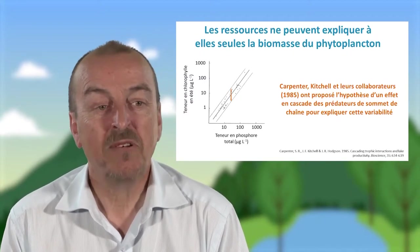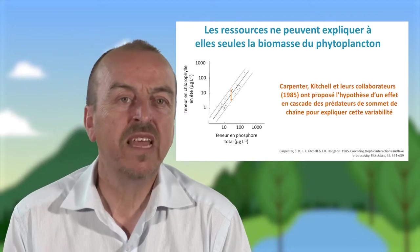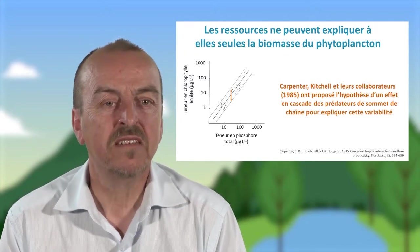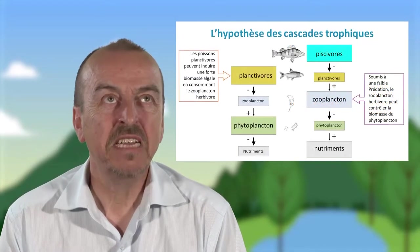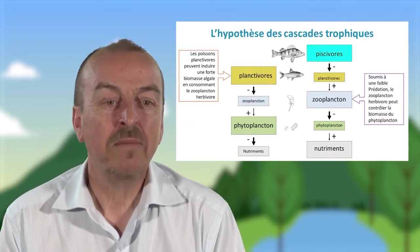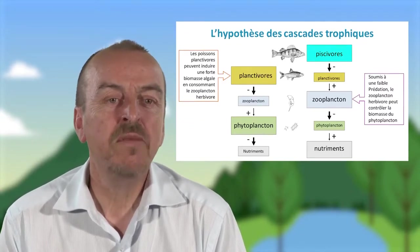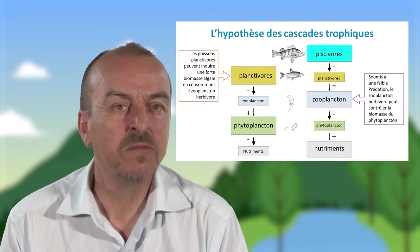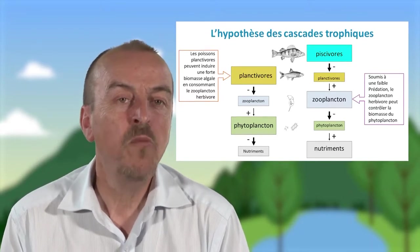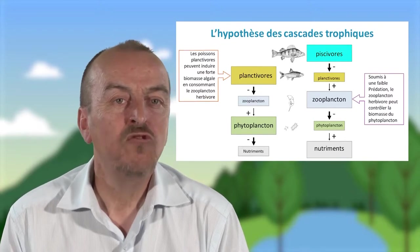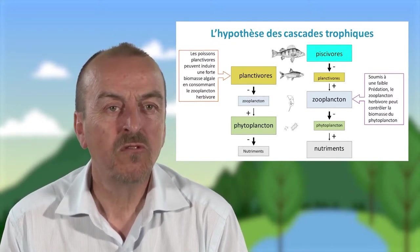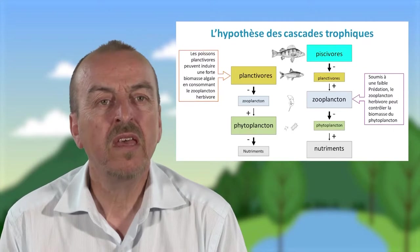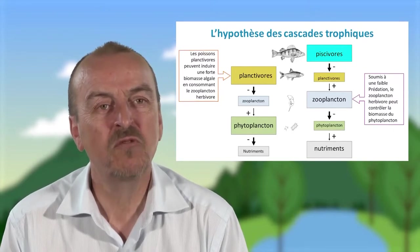Des chercheurs américains, dont Carpenter et Kitchell et certains de leurs collègues, ont proposé une hypothèse qui est nommée l'hypothèse des cascades trophiques. Afin de mieux comprendre cette hypothèse, j'ai réalisé un schéma avec sur la partie gauche une illustration d'une chaîne alimentaire avec trois niveaux trophiques principaux : à la base des producteurs primaires, donc des organismes microscopiques qui sont le phytoplankton, eux-mêmes consommés par du plancton animal qu'on appelle le zooplankton, des organismes qui font quelques centaines de microns à quelques millimètres, eux-mêmes consommés par des poissons planctivores.